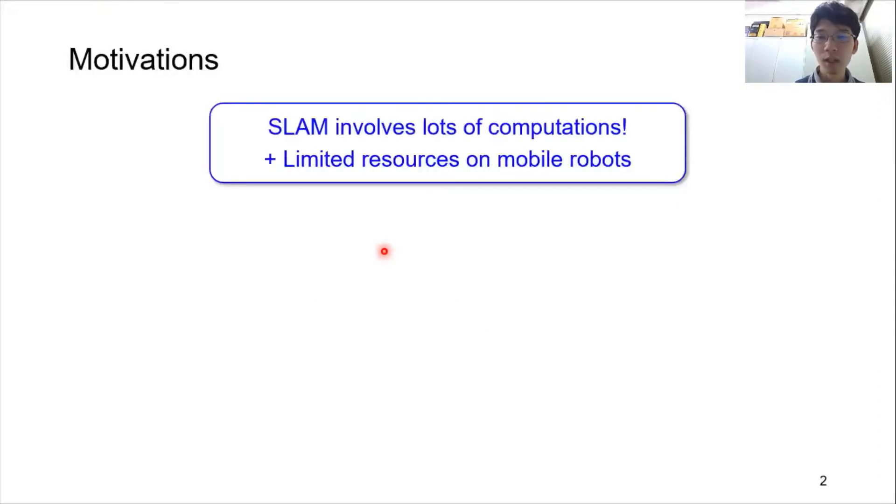I will start by the motivations for this work. SLAM is the process for creating a map of the environment and estimating a position of the robot at the same time. SLAM takes a lot of computations for doing this, so we generally need high-end CPUs to achieve the satisfactory performance. But one problem is that computational resources and power budgets are limited on mobile robots.